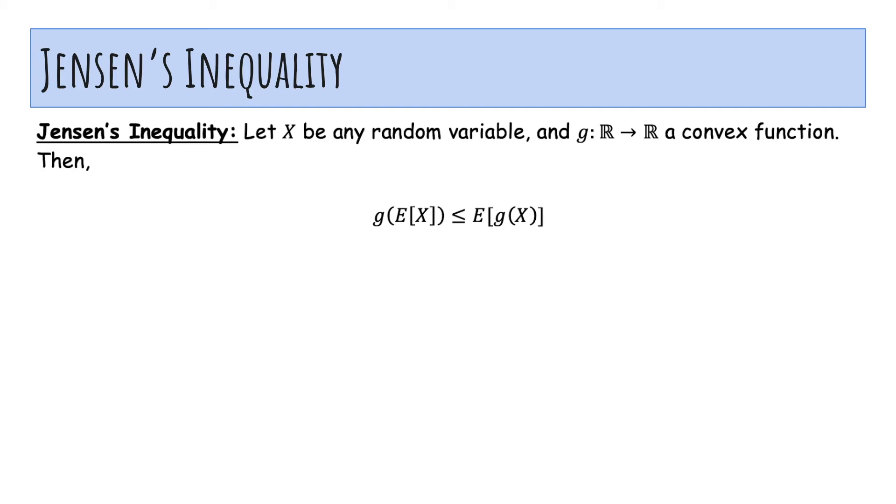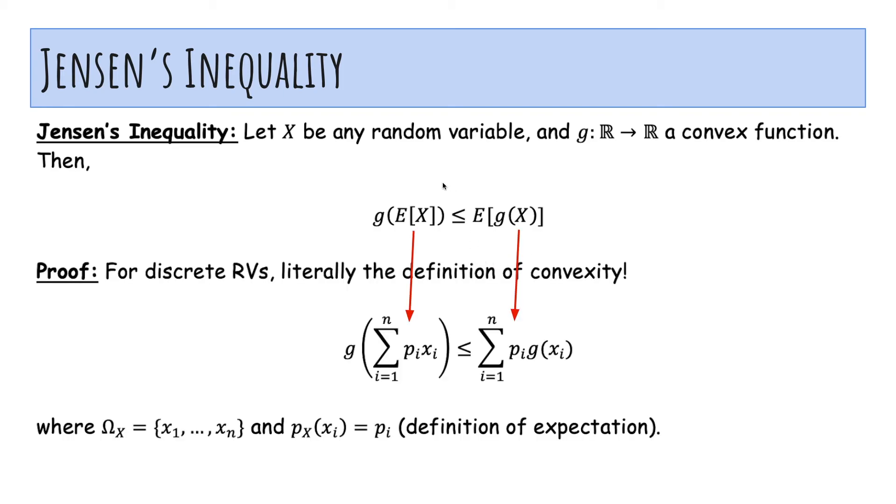So Jensen's inequality says if x is any random variable and g is a convex function, then g of E[X] is less than or equal to E[g(X)]. And how do you prove it? It's actually just the definition of convexity. On this hand, we have like a weighted average pi xi. This is the expected value of some x. And on the right-hand side, we have the expected value of g of x, the probabilities times the g value. And so by definition of expectation, this is true. And this actually shows, for example, if g of x is x squared, this actually shows that E[X²] is greater than or equal to the expected value of x quantity squared. And that's something we knew already, but you can also reprove it with Jensen's inequality.